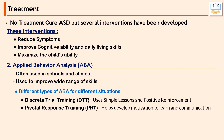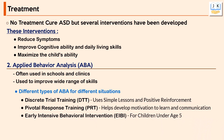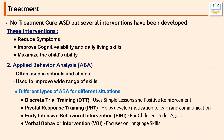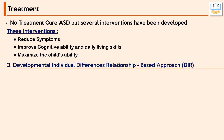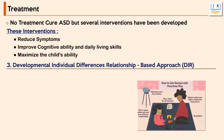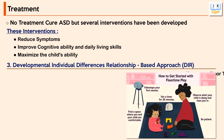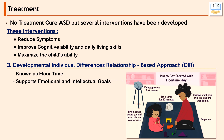Types of ABA include Discrete Trial Training (DTT), which uses simple lessons and positive reinforcement; Pivotal Response Training (PRT), which helps develop motivation to learn and communicate; Early Intensive Behavioral Intervention (EIBI), a base for children under age 5; and Verbal Behavior Intervention (VBI), which focuses on language skills. DIR (Developmental Individual Differences Relationship-based approach), also known as floor time, involves getting on the floor with your child to play and do activities they like, supporting emotional and intellectual growth through communication and emotions.